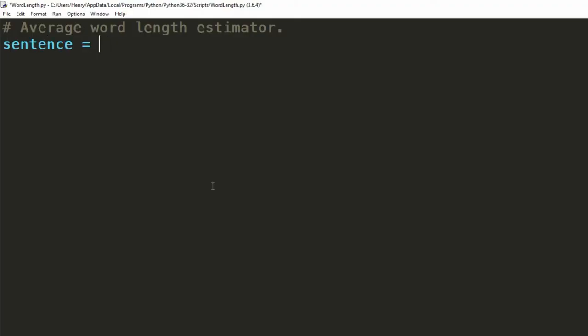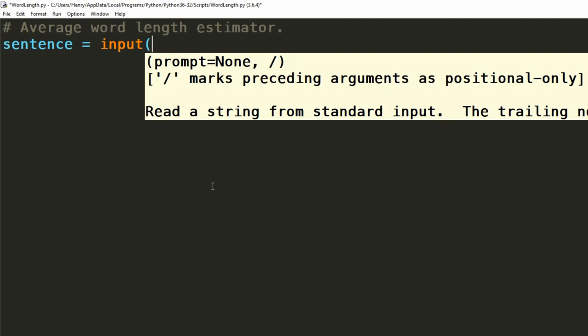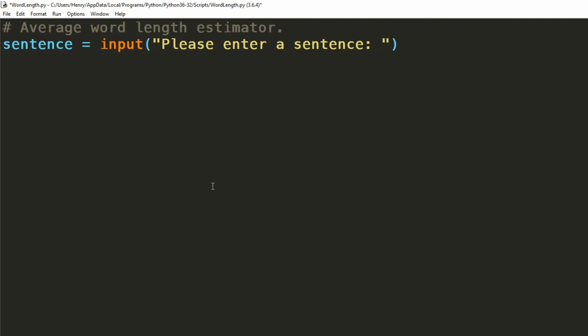As we've previously covered to get a sentence from the user we use the input command. We can then store their sentence in a variable called sentence. To get the total length of the sentence we use the len command on the variable we created. We'll then store this value in an intermediate variable.